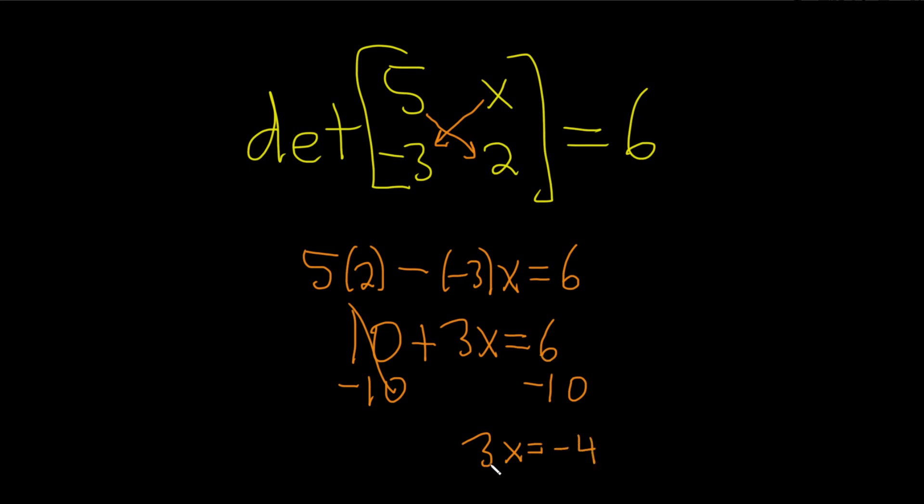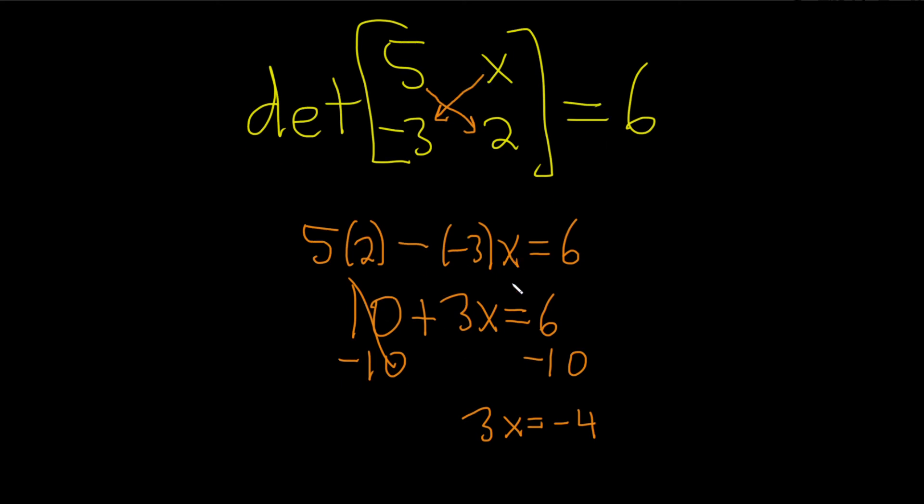All right, almost done. x is being multiplied by 3. So to solve for it, we'll just divide by 3. So divide by 3, divide by 3. That gives us x equals negative 4 over 3. And that would be the final answer.